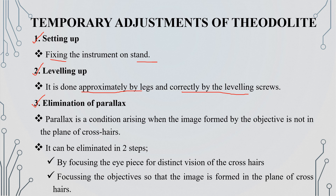Next, we eliminate parallax. Parallax is a condition arising when the image formed by the objective is not in the plane of the crosshairs. To eliminate it: first, we focus on the eyepiece; second, we focus on the objective. Then the image will be in the plane of the crosshairs and the section will be corrected.